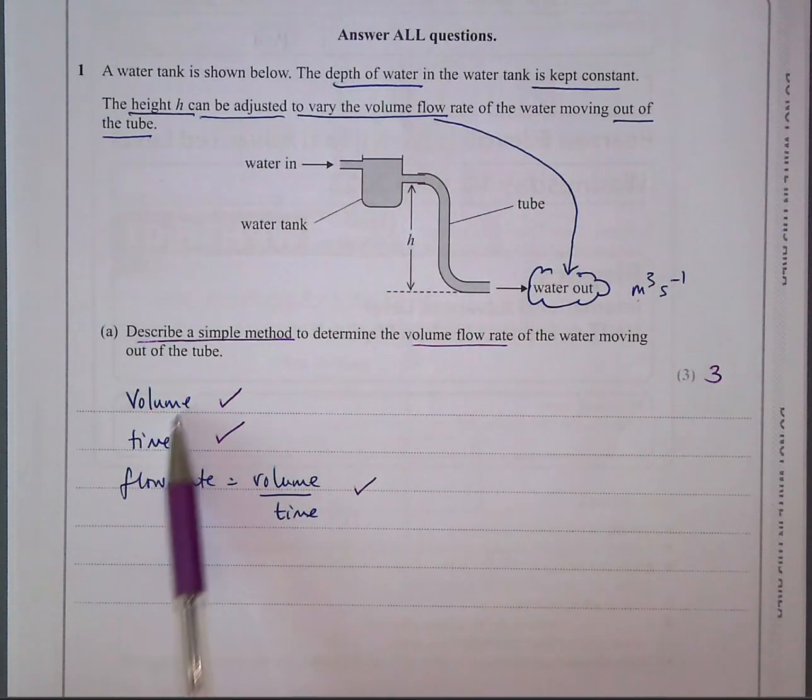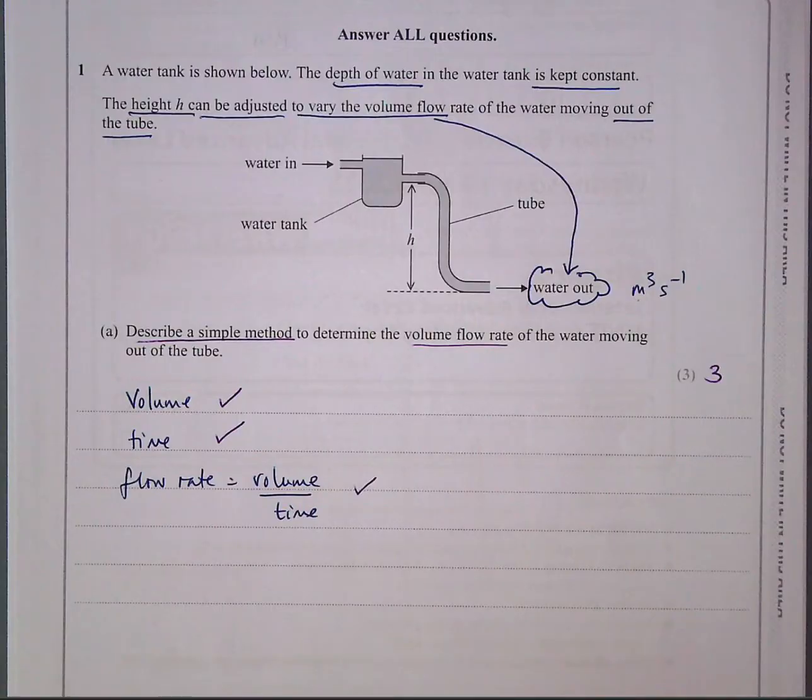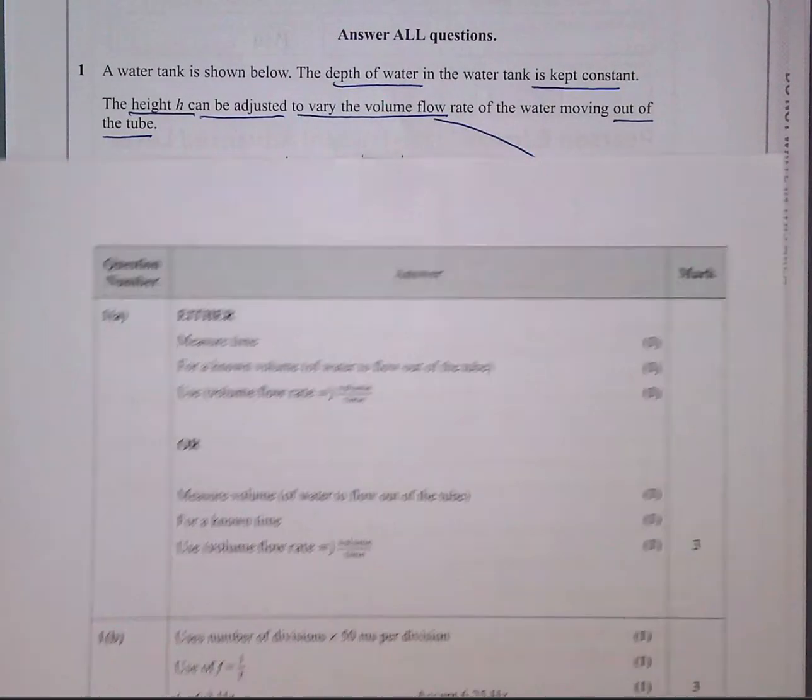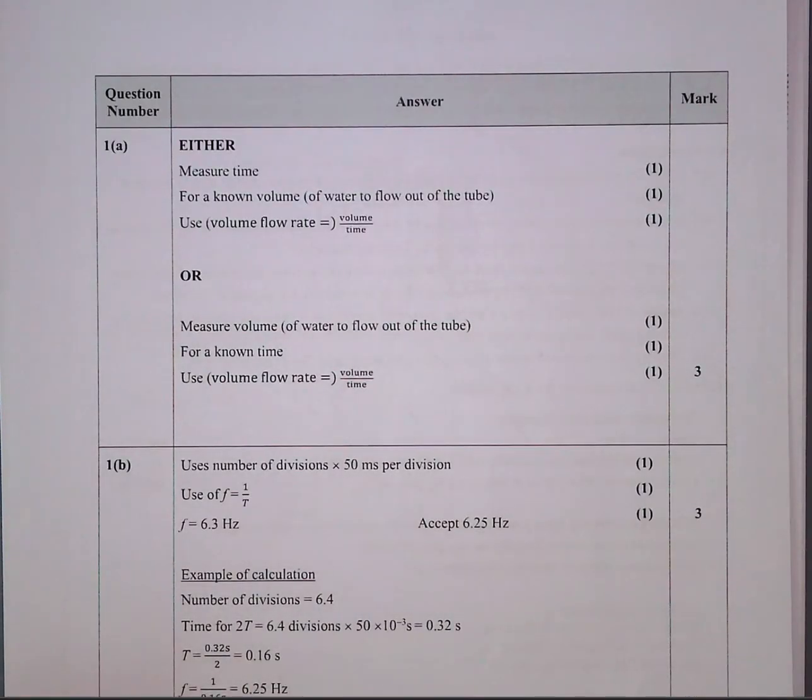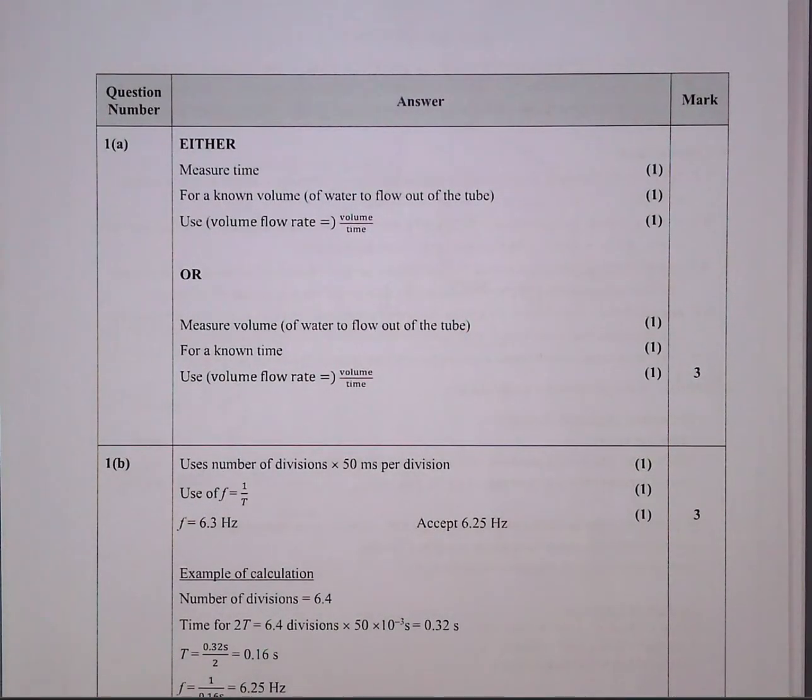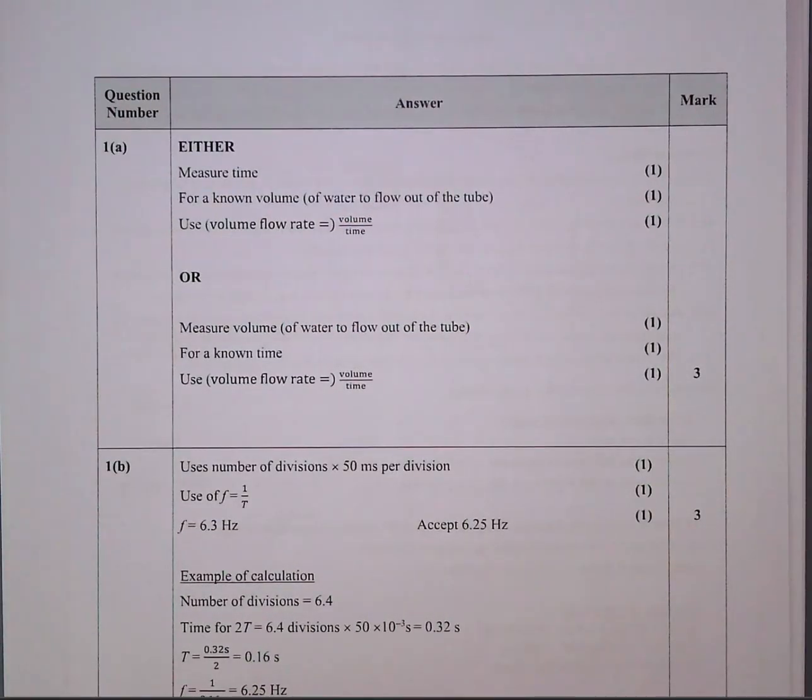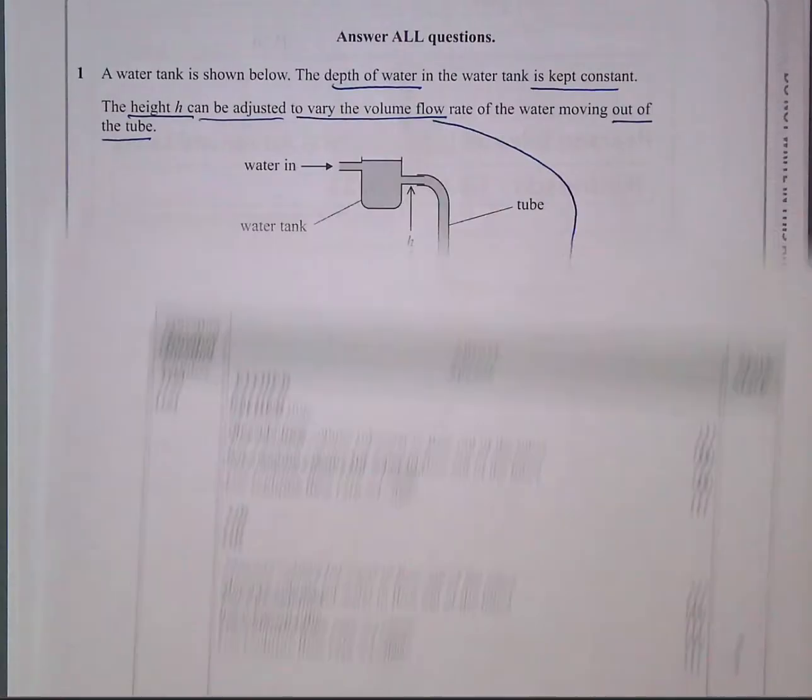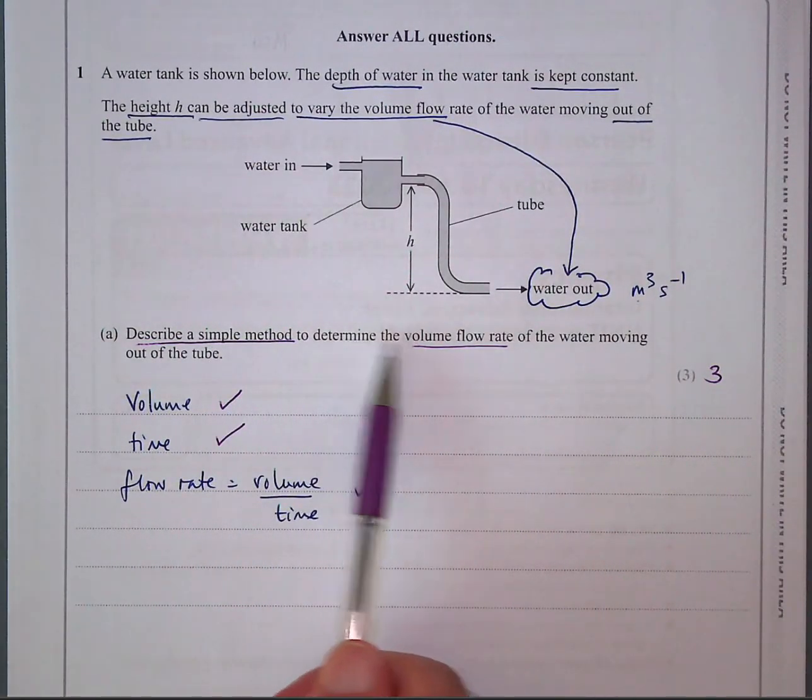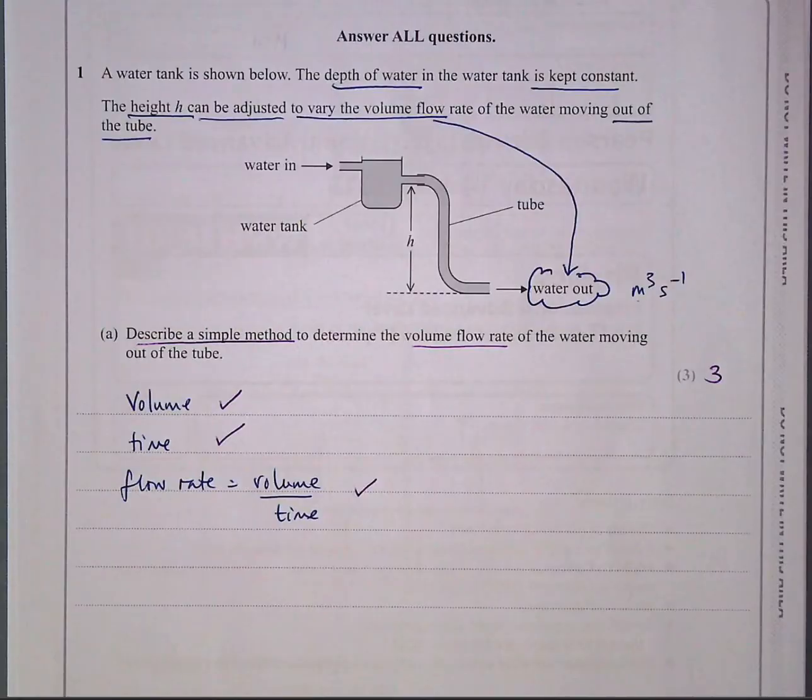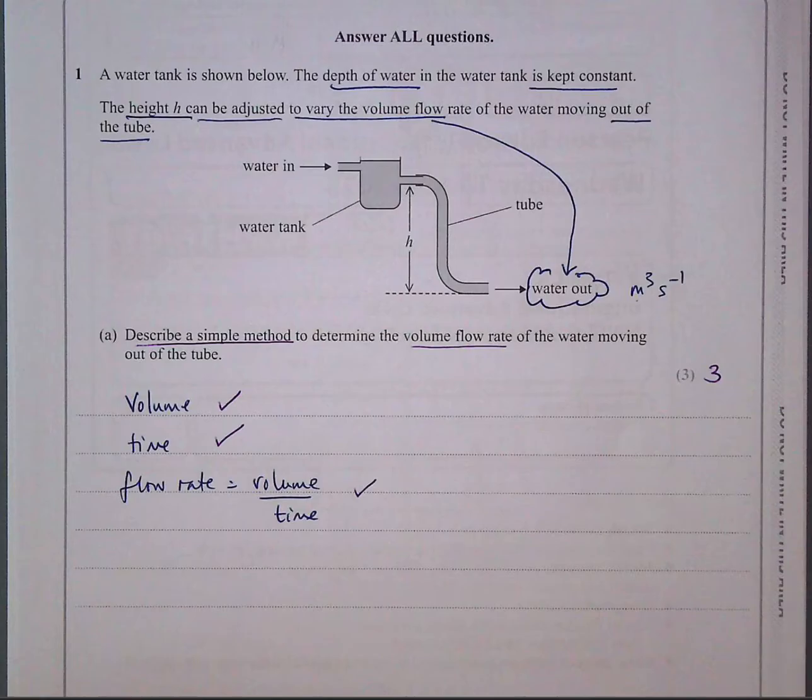And the flow rate is divide the volume by the time. So what does the mark scheme say? The mark scheme simply puts it as the either-or situation. So that's what you've got to do. The first question is very simple. They do not want to complicate a method. So make sure you read the active words, which here is describe a simple method to measure or to determine the volume flow rate. They're not asking you to do an investigation on it. You don't have to change the height or anything. You just do it once and measure it.